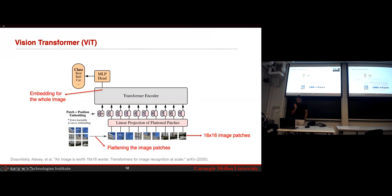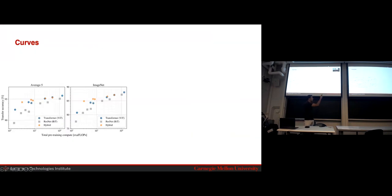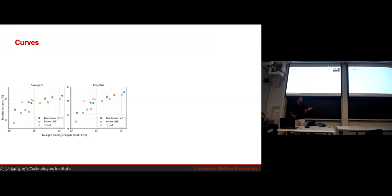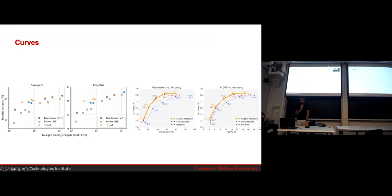A few curves show that ViT is more compute efficient. They compared a ViT model, a ResNet-like model, and a hybrid. Transformers outperform ResNet, and the hybrid — mixing the two structures — is more compute efficient. ResNet does catch up if trained longer, but the key factor is ViT achieves equal or better performance with a reduced number of parameters.